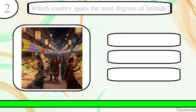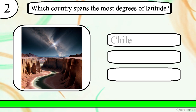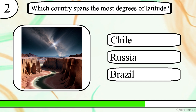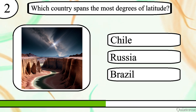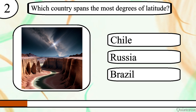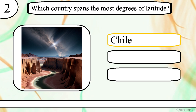Question 2. Which country spans the most degrees of latitude? Chile, Russia or Brazil? The correct answer is Chile.